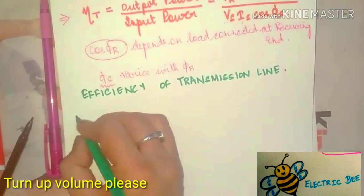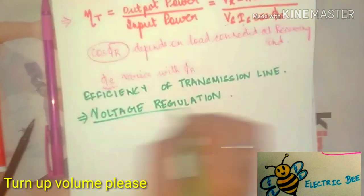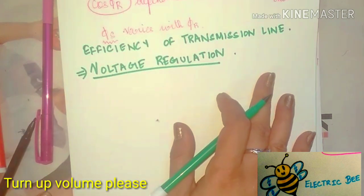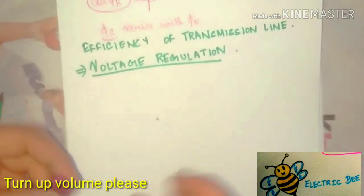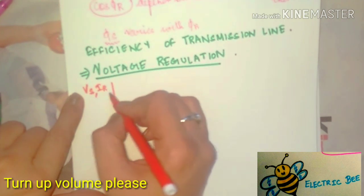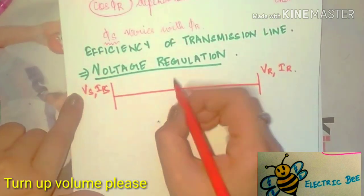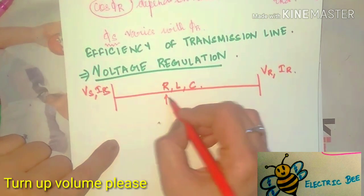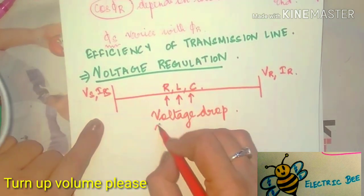Another major important factor is voltage regulation. This is a very important topic relevant in power systems, basic electrical engineering, and even in electrical machines when studying transformers. Consider the sending end voltage VS and current IS on one side of the transmission line, and the receiving end voltage VR and current IR on the other side. The transmission line has parameters: resistance, inductance, and capacitance.